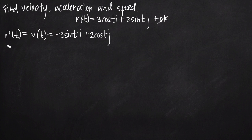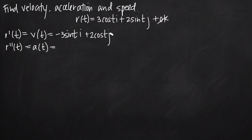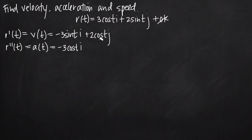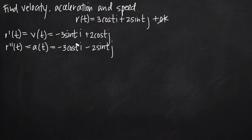To find acceleration, we take the second derivative of the position function: r''(t), also called a(t). We take the derivative of our velocity function. The derivative of -3sin(t) is -3cos(t)i, since the derivative of sin(t) is cos(t). The derivative of 2cos(t) is -2sin(t), so we get minus 2sin(t)j. So our acceleration function is a(t) = -3cos(t)i - 2sin(t)j. These are both vectors, so we call them the velocity vector and the acceleration vector.